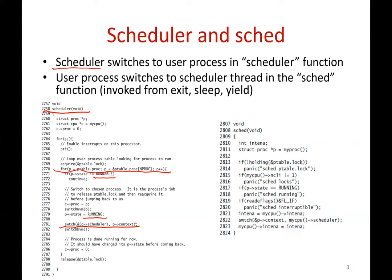A process, once it runs for some time and wants to give up the CPU, will call the function sched. This sched function simply switches back into the scheduler again. The scheduler function will switch to some process, that process after running enough will call sched, and sched will come back into the scheduler loop — and this will keep going on.